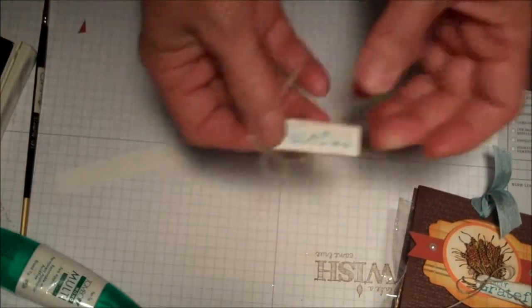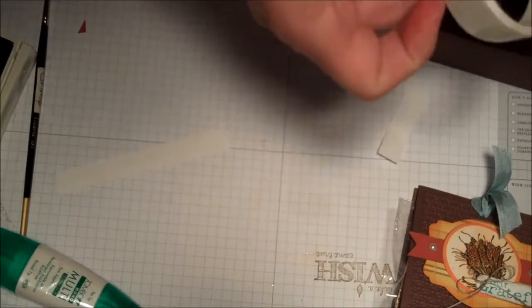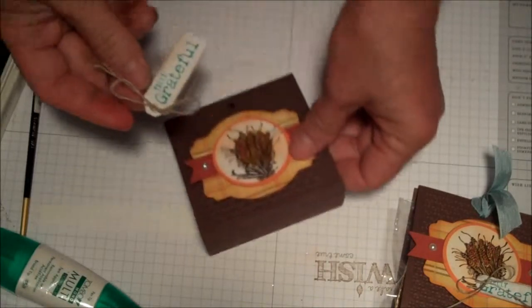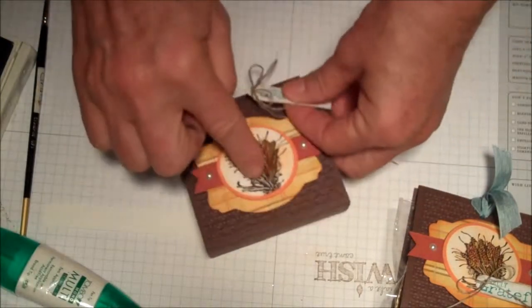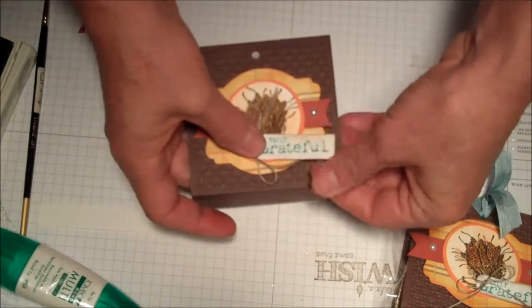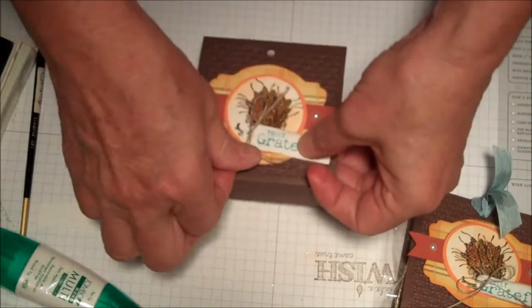That can go on with a glue dot, and I just put it right at the bottom of the wheat, kind of where the bow is. There's a bow on the wheat stamp, so that's kind of where I decided to put it like that.